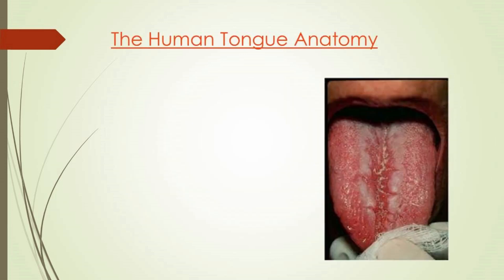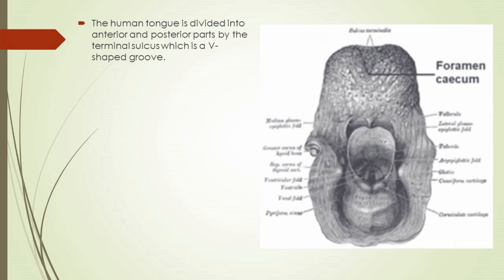The human tongue is divided into two parts: an oral part at the front and a pharyngeal part at the back. The left and right sides are separated along most of its length by a vertical section of fibrous tissue — the lingual septum — resulting in a groove called the median sulcus. The tongue is divided into anterior and posterior parts by the terminal sulcus, a V-shaped groove whose apex is marked by the foramen cecum, a remnant of the median thyroid diverticulum in early embryonic development.